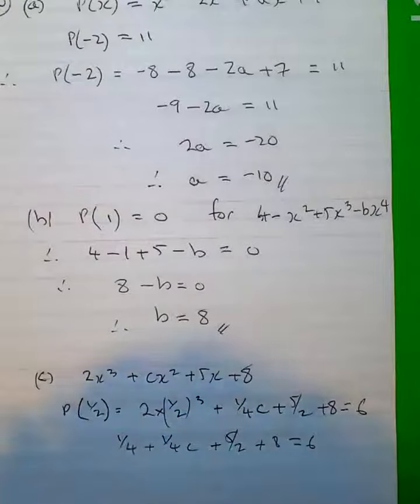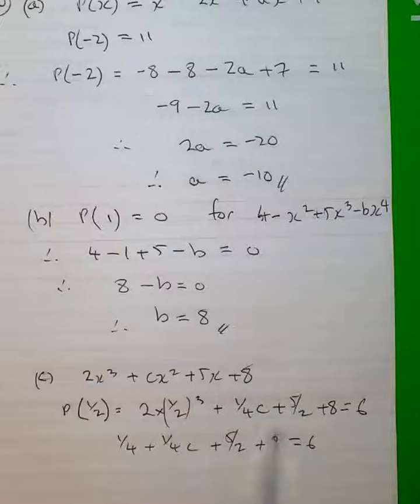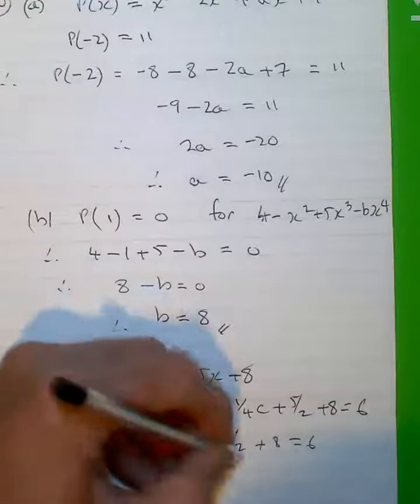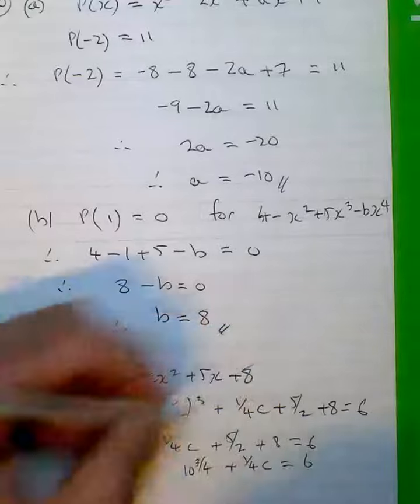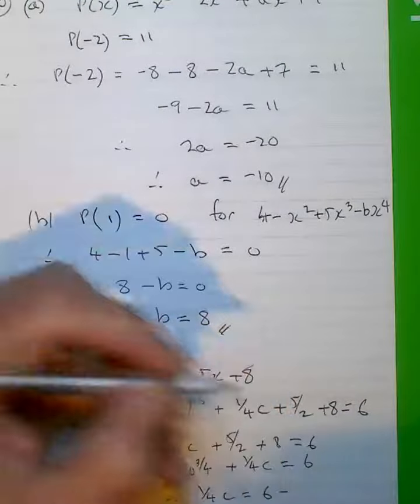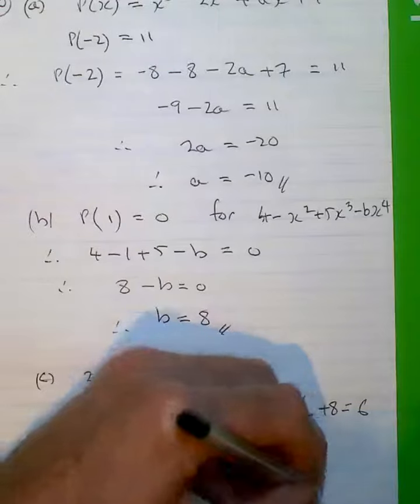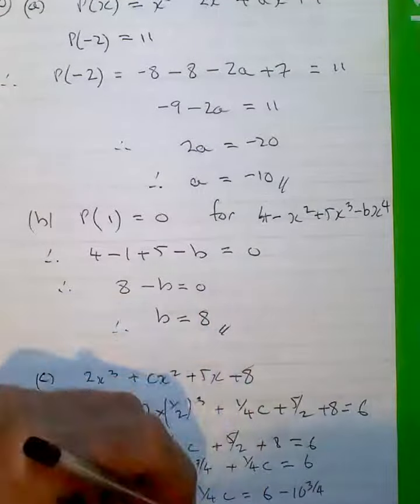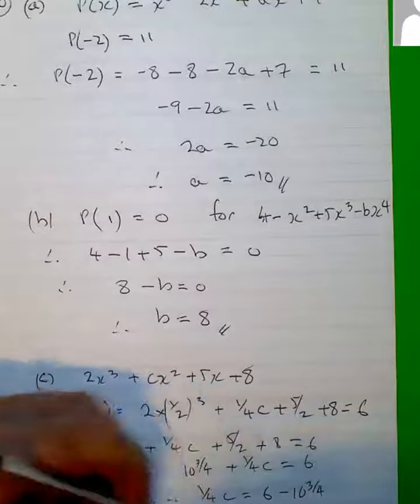In a similar style, a little bit messier for part c, I've substituted in an 8th there, knowing the remainder there is 6. So gathering that all up, I've got 10 and 3 quarters plus a quarter c is equal to 6. 6 minus 10 and 3 quarters, which becomes 19 over 4, negative 19 over 4.